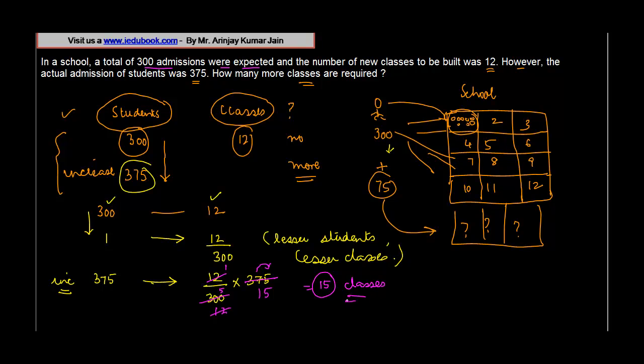So basically you require 15 classes to fit in these 375 students. And obviously, if you notice, the number of students increased, the number of classes also increased. So what case is this? Is this a direct variation or an indirect variation? Yes, it's a direct variation in unitary method.